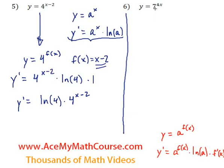How about for this? y equals 7 to the power of 4x. y prime will be, so very similar idea, right? 4x is f of x in this case.